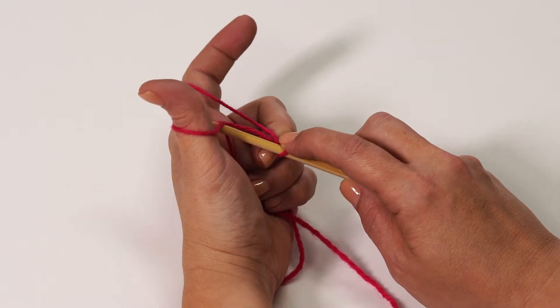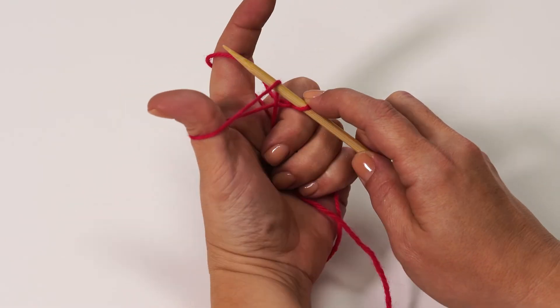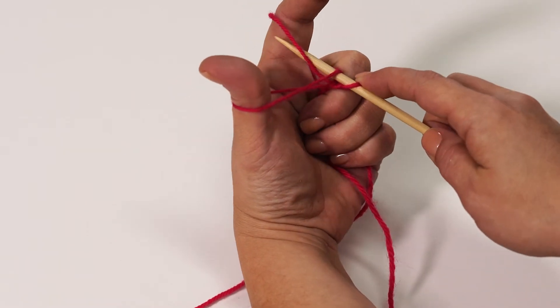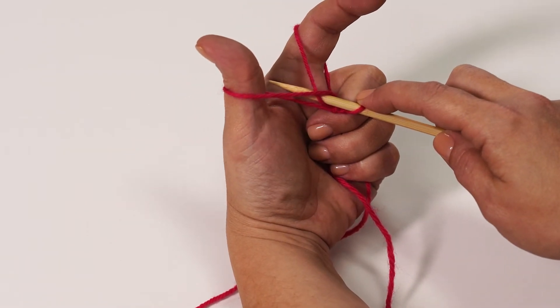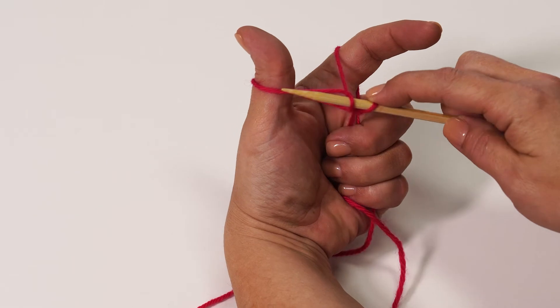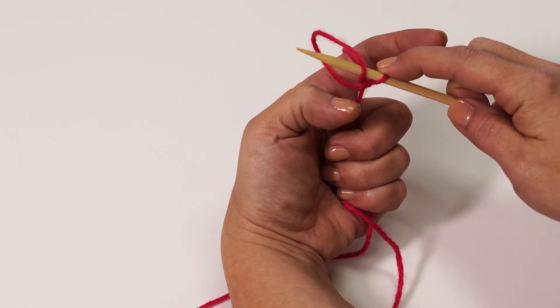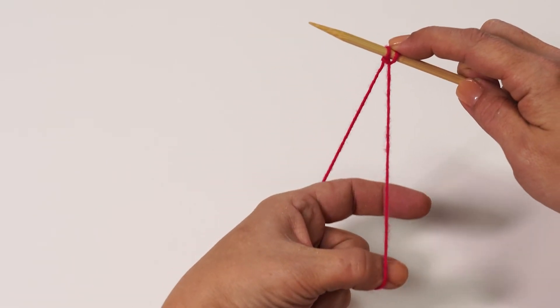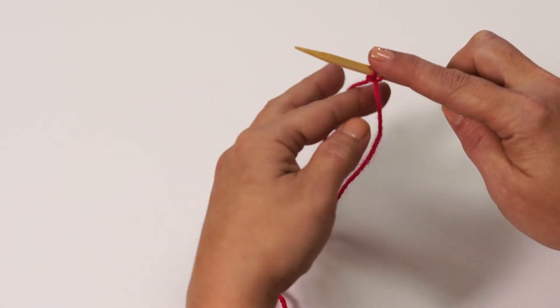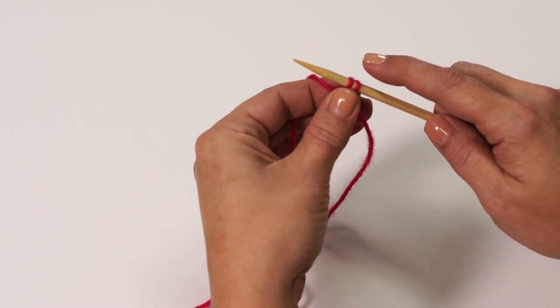Insert the needle under the bottom strand of your thumb. Then bring it over the yarn on the inside of your index finger and back through the loop on your thumb. Slide your thumb out to finish. Snug it up on your needle. Remember, comfortably loose.